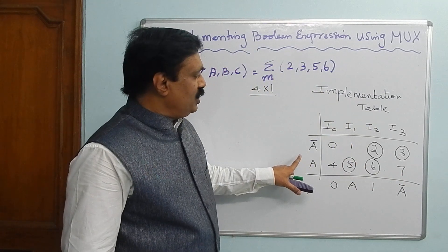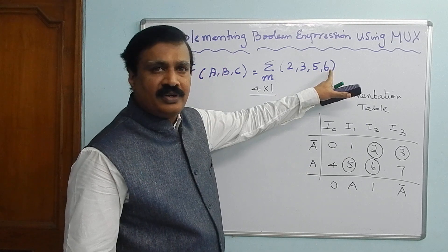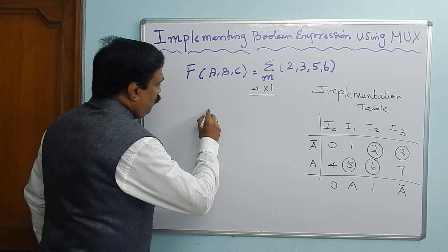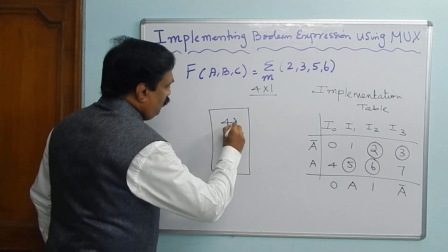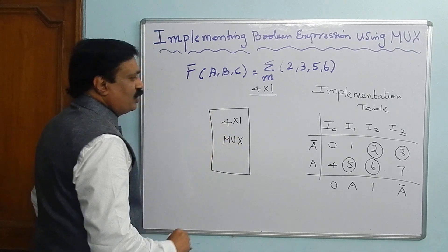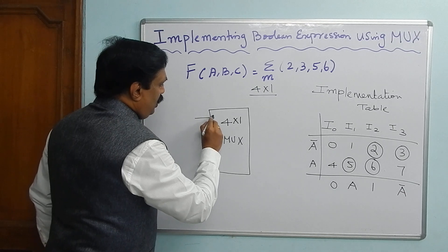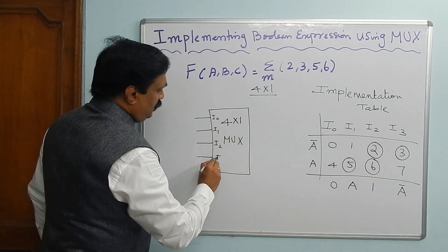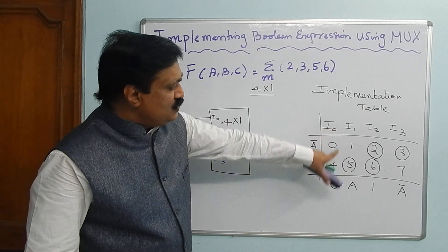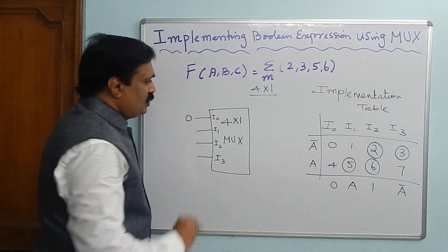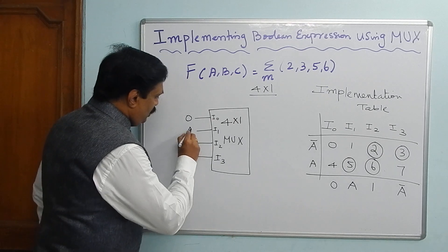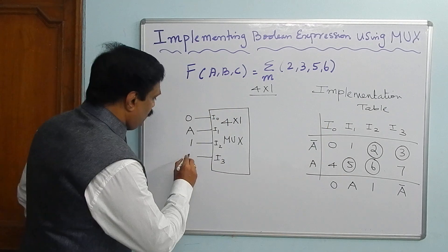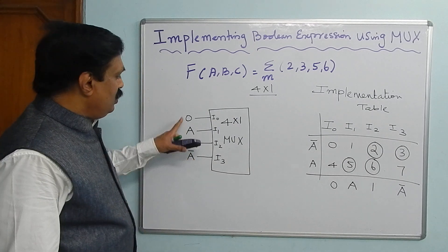This is the implementation table. We have substituted the terms given and obtained the variables. Now we have to draw the 4-by-1 multiplexer. It is very simple — 4 inputs are there: I0, I1, I2, and I3. I0 is 0, I1 belongs to variable A, I2 is 1, and I3 is A complement. All the inputs are now assigned.